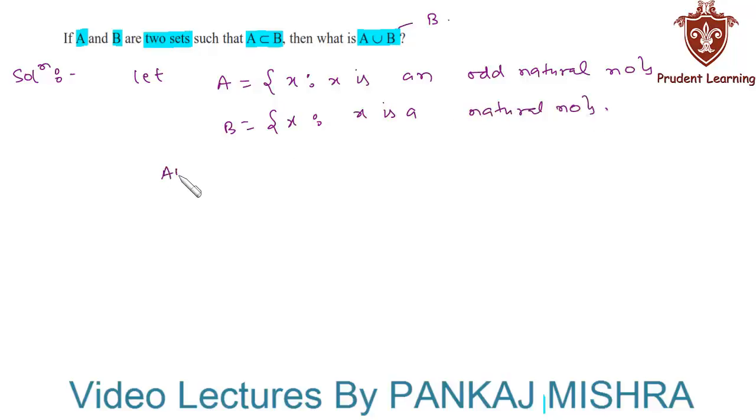Now we know that here A union B is nothing but X such that X is a natural number. This is the union of these two sets, which is nothing but set B itself.